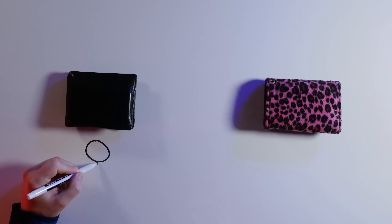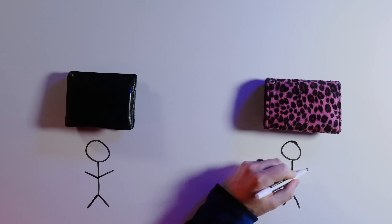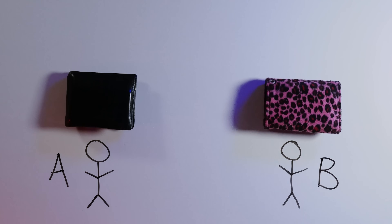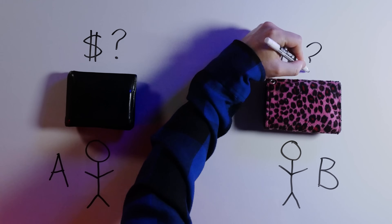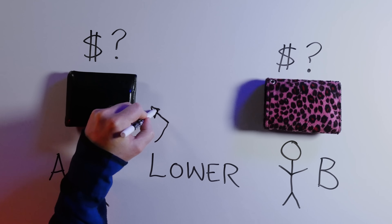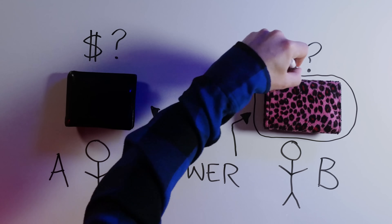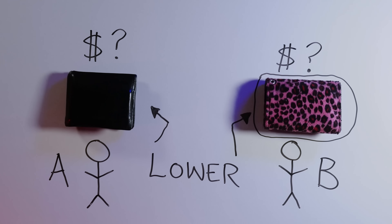Imagine I choose two people randomly as they walk on the streets of Manhattan. I give them the option to play a game. They compare the amount of money in their wallets, and the person with the lower amount wins all the money in the other wallet. So, does either person have an advantage? The math says no. You say yes. But wallets can wait.